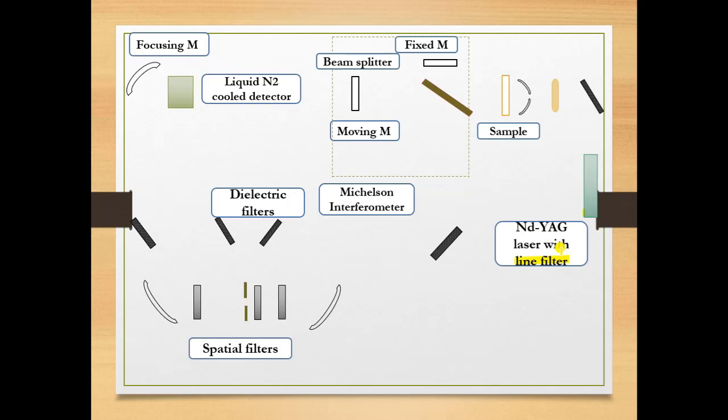Whatever light we are passing from the exciting laser, that stray light must be eliminated because it can saturate many transducers. That's why with the laser we are using a line filter to eliminate the stray light.